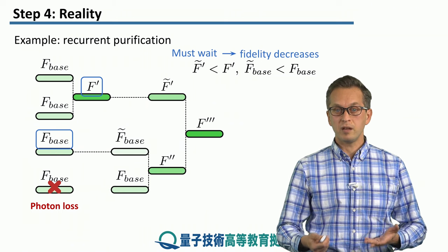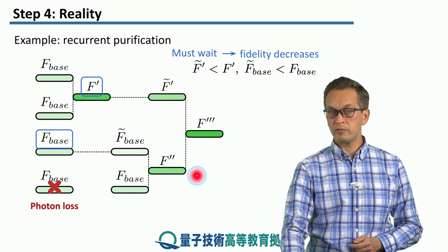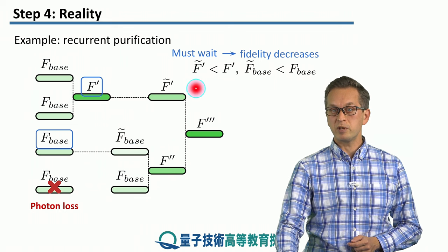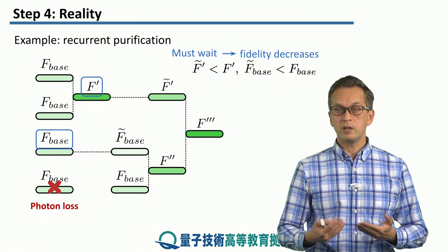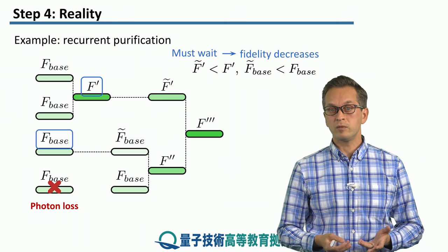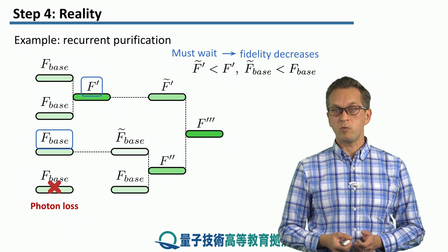And then, therefore, these new fidelities, F double prime and also F triple prime will be smaller, as if they were when there was no decoherence errors while waiting.